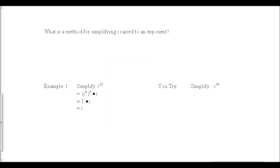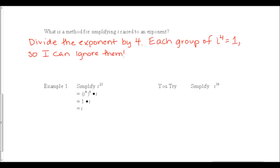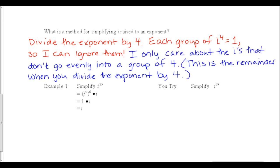So what if we want a method for simplifying i raised to an exponent? I like using i to the fourth. The first thing to do is divide the exponent into groups of four. Each group of i to the fourth equals 1, so we can ignore them. We only care about the ones that don't go evenly into a group of four — that is, the remainder when you divide the exponent by four.